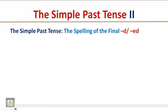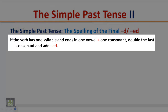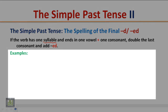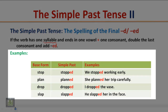Rule 3: If the verb has one syllable and ends in one vowel plus one consonant, double the last consonant and add ED. Examples: 'Stop' has one syllable, ends in one vowel plus one consonant — double the consonant and add ED: we stopped working early. 'Plan' has one syllable, ends in one vowel and one consonant — double the consonant and add ED: she planned her trip carefully.